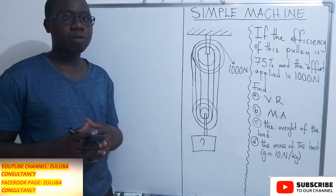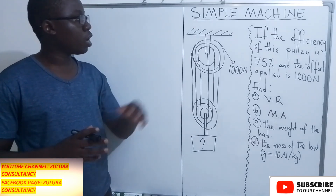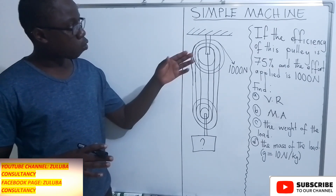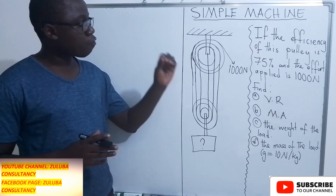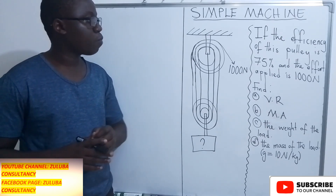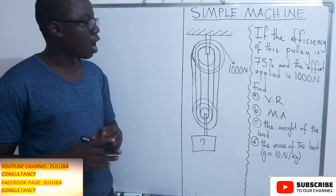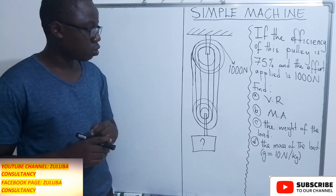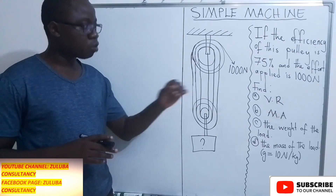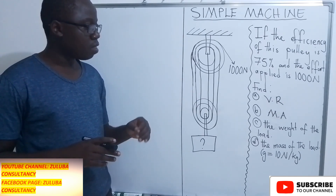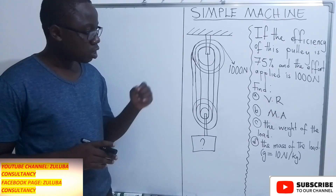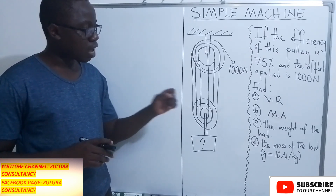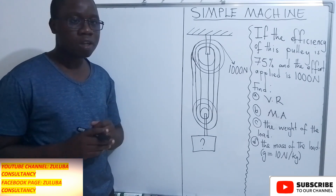Hello and welcome back to Zuluwa Consultants. In this video, I want to look at this question under the topic simple machines. The question reads: if the efficiency of the pulley is 75% and the effort applied is 1000 newtons, find A) the velocity ratio, B) the mechanical advantage, C) the weight of the load, and last but not least, D) the mass of the load.